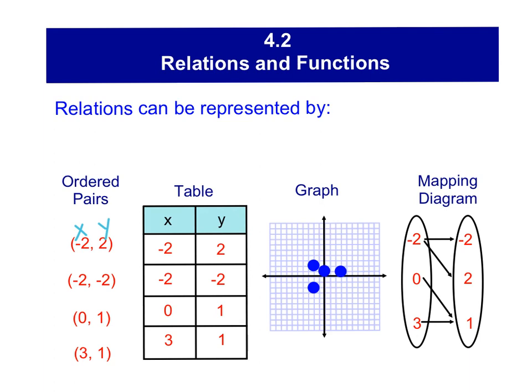You can represent your relation in a table. So these same ordered pairs can be just in a table of values where we have a column of our x's and a column of our y's. For a graph, we could plot all of our ordered pairs. You can see from the origin, negative 2, positive 2. There's the first one. Then back to the origin, negative 2, negative 2 is right there. 0, 1 is right there. And then 3, 1 is right there. So it's a visual representation of a relation.